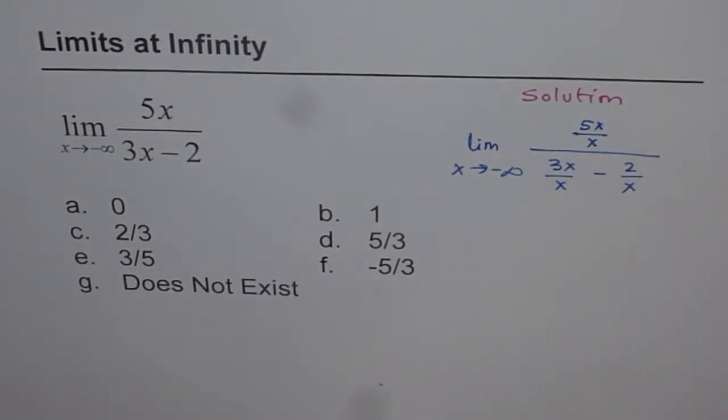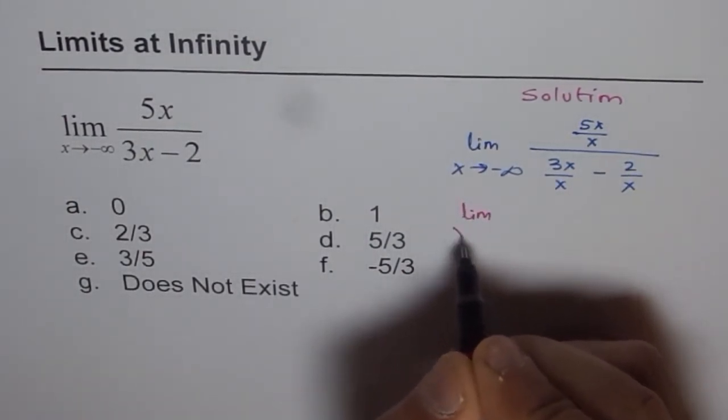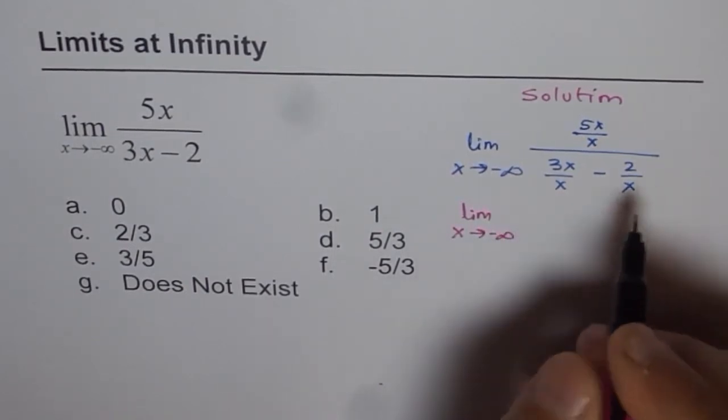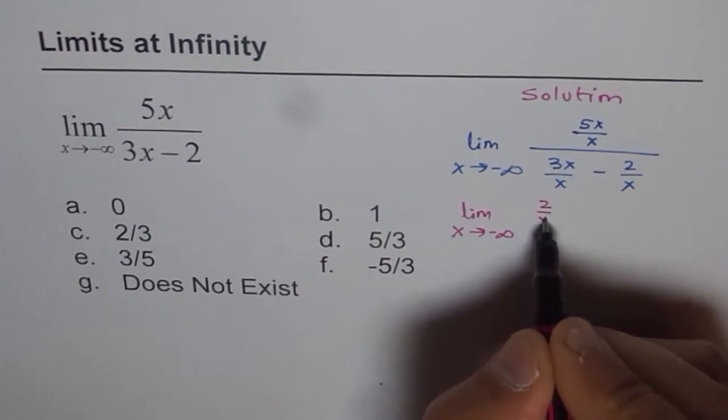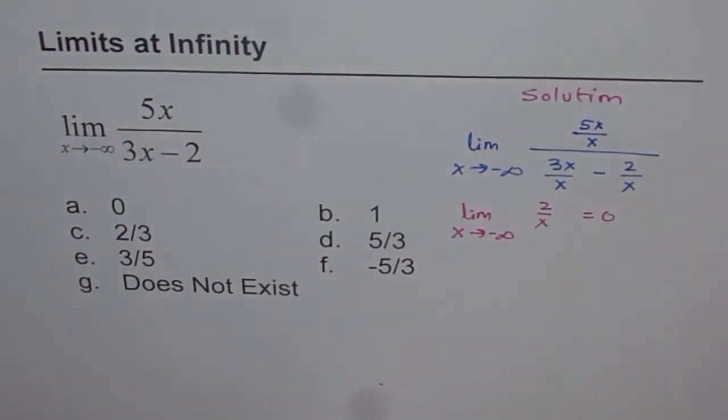Now, as you know, the limit of a function like 2 over x when x approaches negative infinity equals 0. Therefore...